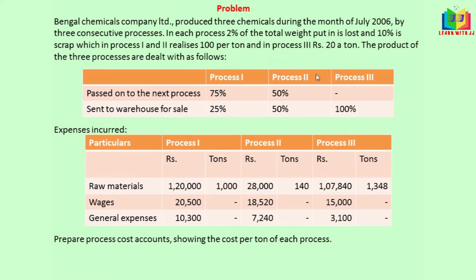Looking at Process 2, 50% goes to the next process and 50% goes to warehouse. And for the third process, the entire output goes to warehouse.